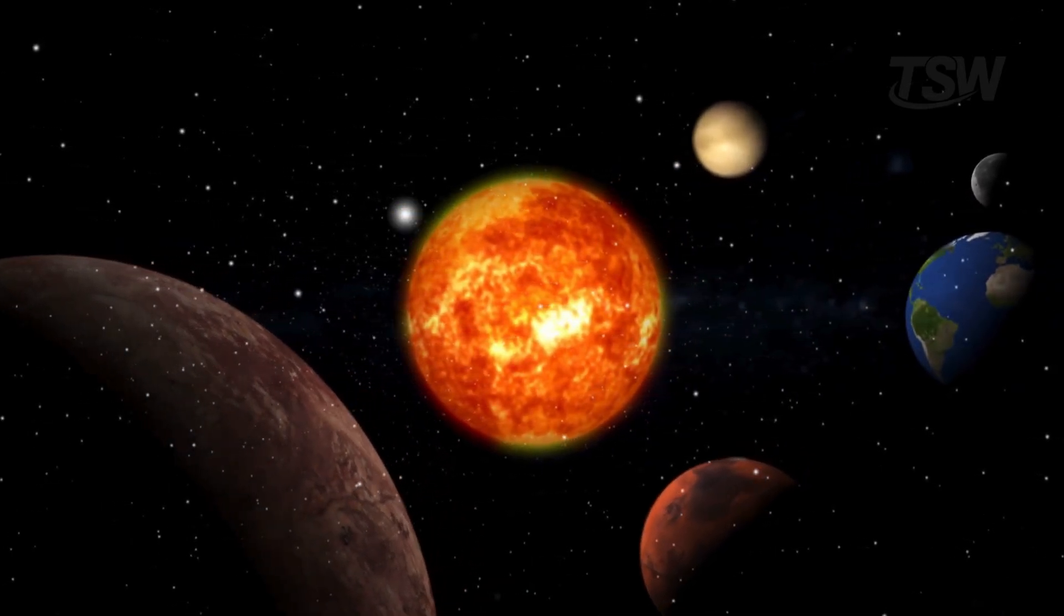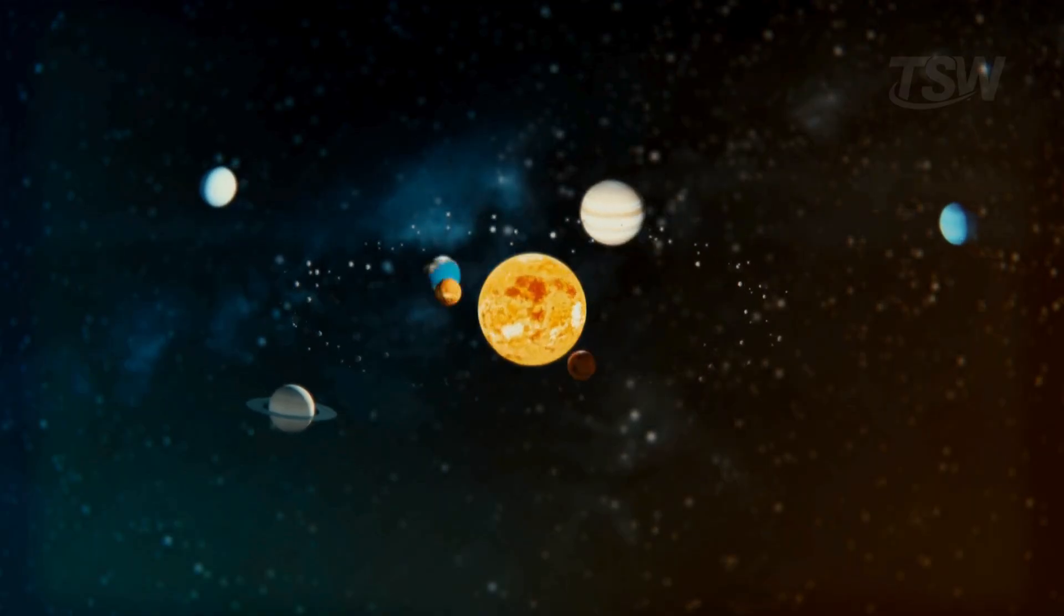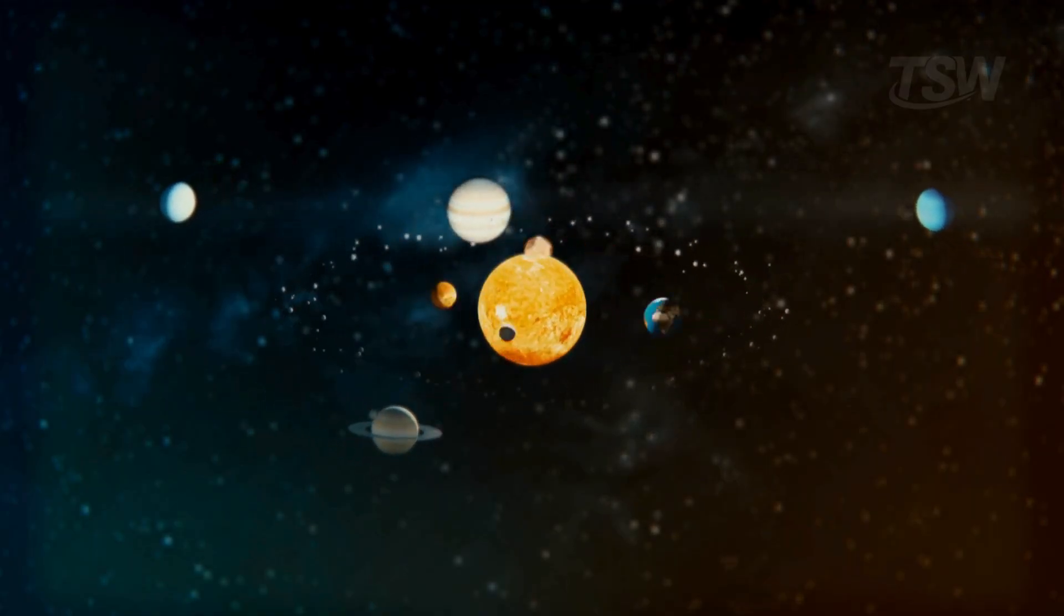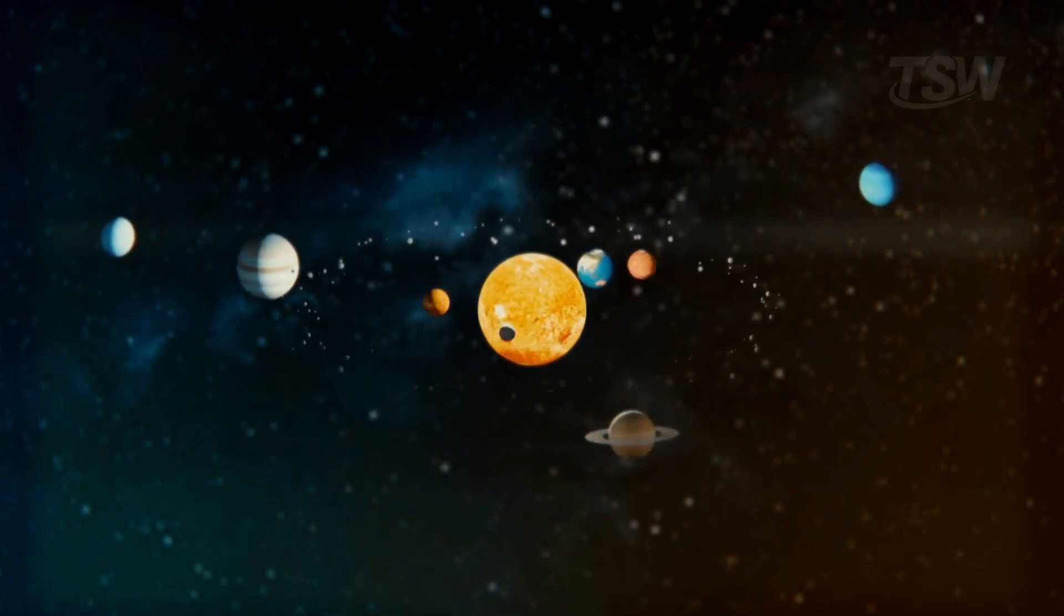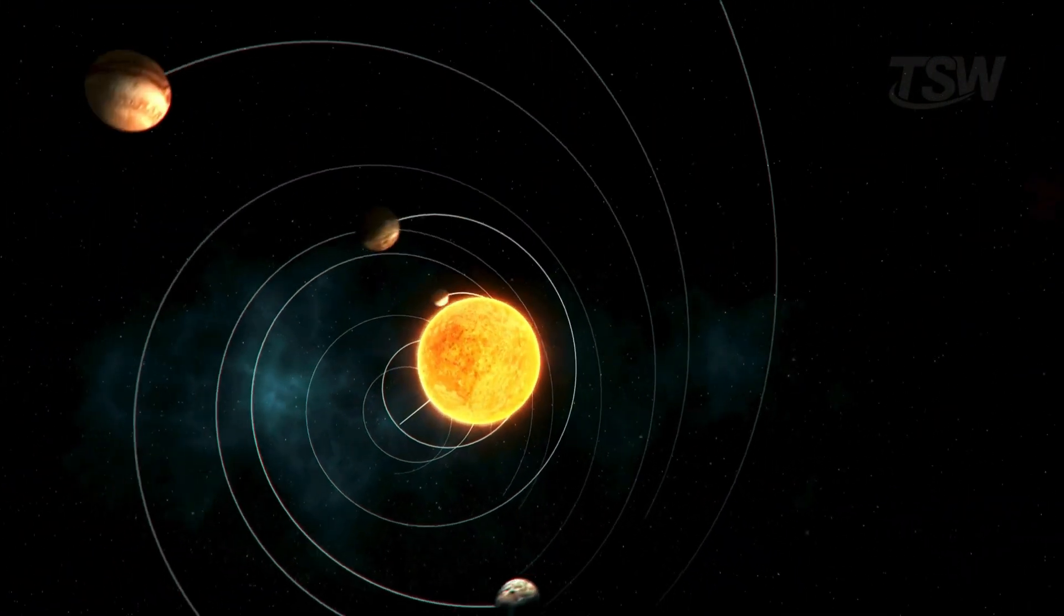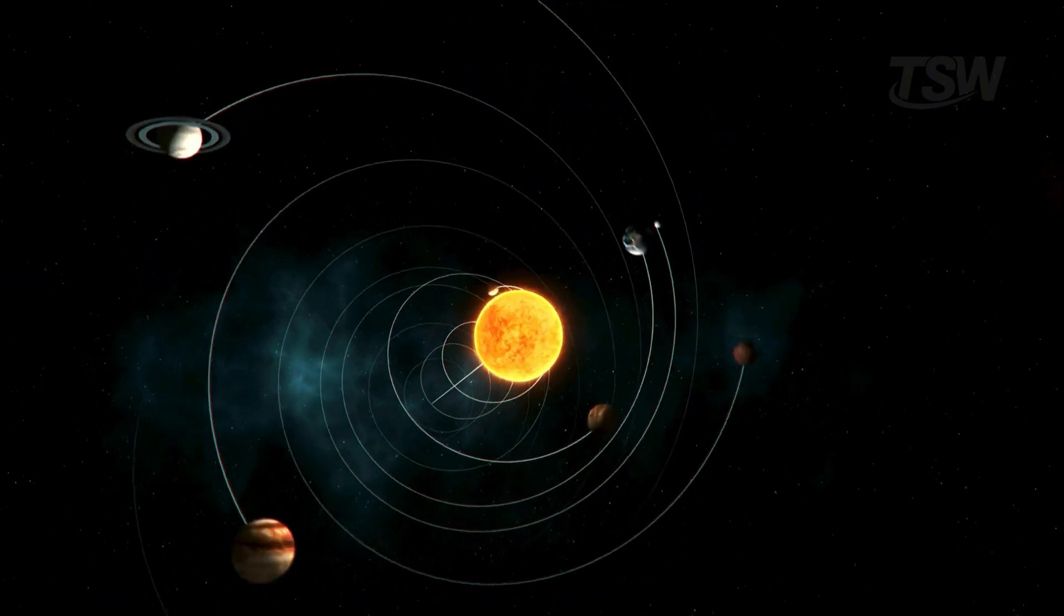Earth, for example, completes its yearly orbit, but does so while moving through space along with the sun. In other words, the planet never returns to exactly the same spot. It draws a new curve in the vastness of the cosmos, moving forward every second.